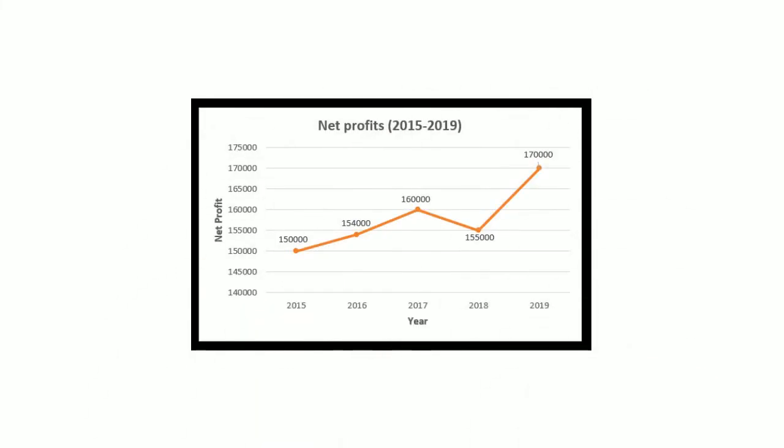Let's take some time to look into the chart more deeply. Why are the years taken along the x-axis? That is because in a line chart, we always take categories on the x-axis and the values for those categories on the y-axis. That's why we have taken the year — the category — on the x-axis and the respective value, net profits, on the y-axis.